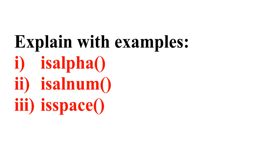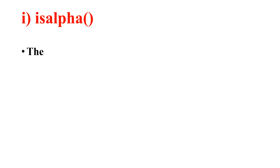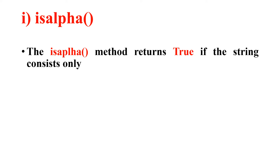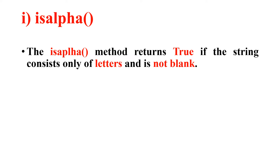The isalpha method returns true if the string consists only of letters and is not blank. To get true, the string should contain only letters. If there are letters along with numbers, I would get false. If there are only numbers, I would still get false, and if it is blank I would get false as the answer.